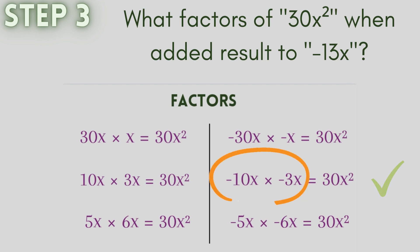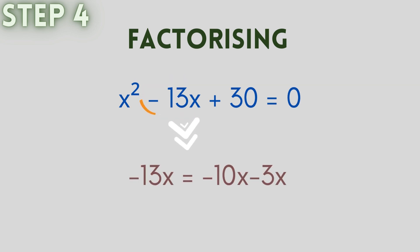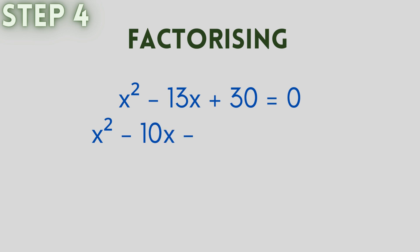Now let us move on to the final step, factorizing. The equation is x² - 13x + 30 = 0. Firstly, in place of minus 13x, let us write minus 10x minus 3x which is also combination of factors that when multiplied give us 30x². So we will get x² - 10x - 3x + 30 = 0.